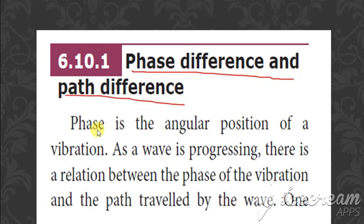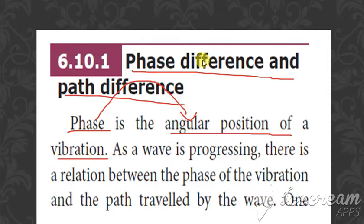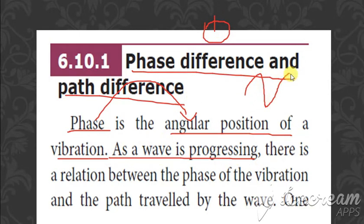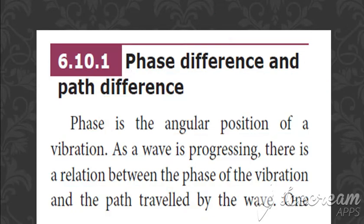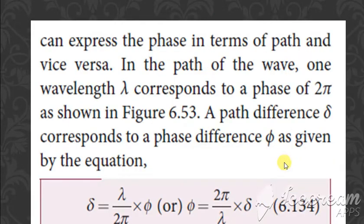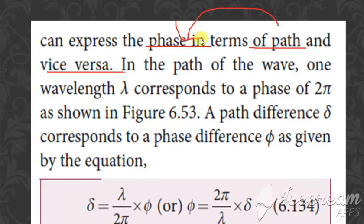Phase difference and path difference. Phase is nothing but the angle — the angular position of vibration, how the angle varies. As the wave is progressing, moving forward, there is a relation between the phase as well as the path. One can express the phase in terms of path and also vice versa: path can be expressed in terms of phase.